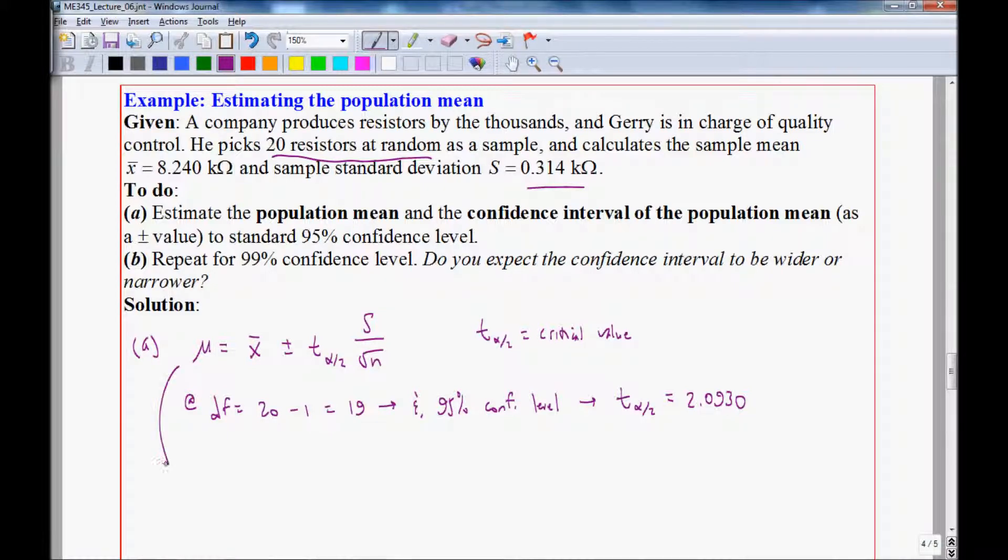Now we plug in this value into the equation. So the predicted population mean is the sample mean, 8.240, from the given information, plus or minus T alpha over 2, which is 2.0930, times S, which was also given 0.314,